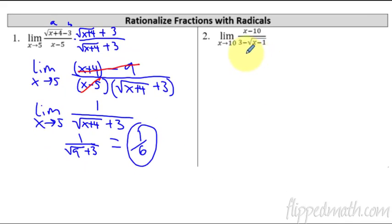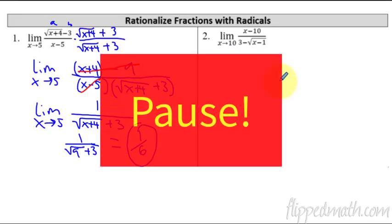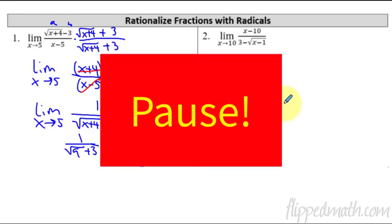So let's try this again. This time we have the radical on the bottom. I want you to pause the video and try this one on your own — it's the same steps. This time you multiply by the conjugate of what's on the bottom, because that's where the radical is. Give it a shot and I'll have the work appear in just a few seconds.